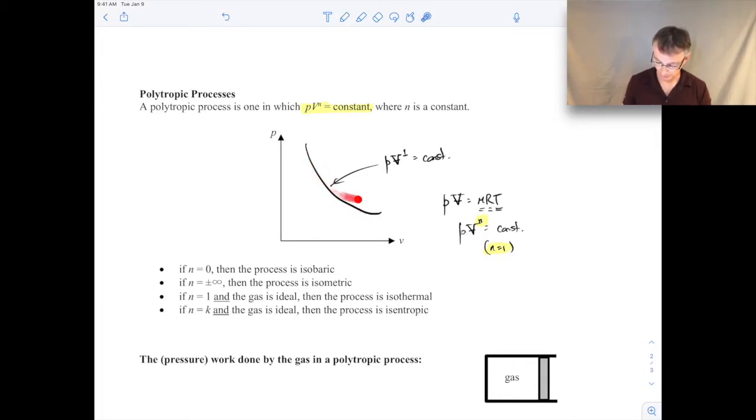Like I said it all depends on what the exponent N is. But this expression traces out a relationship between pressure and volume. Notice by the way I have a volume here and I have a specific volume. You can do it either way. You can also write P times little v to the N is equal to a constant. That's a polytropic process as well.